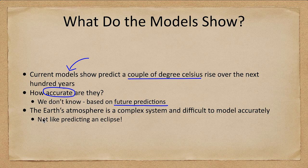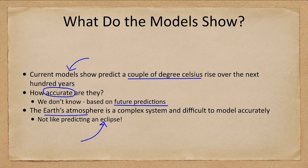The Earth's atmosphere is very complex — this is not something like predicting an eclipse. We can tell you when the next eclipse will occur, hundreds of years from now, down to the second. We cannot tell you with anything close to that accuracy what the average temperature of Earth will be a hundred years from now.